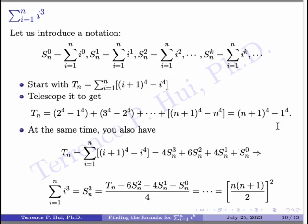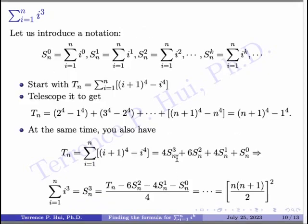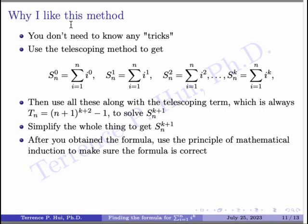You plug everything back in. Remember, you know the answer to sn0. You know the answer to sn1, which is n times (n plus 1) over 2. You also know sn2, which is n times (n plus 1) times (2n plus 1) over 6. So you have all these pieces — just plug them back in, simplify the math, and you're going to come up with n times (n plus 1) all over 2, everything squared. So starting from sn0, you establish a formula; then sn1; then sn2; and now sn3. Once you know sn3, you can go and do sn4, and so on and so forth.